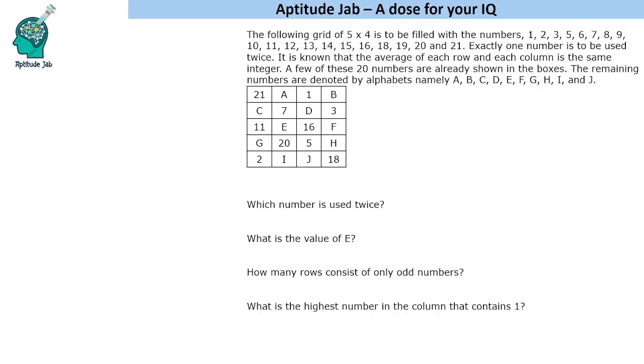Hello everyone, welcome to Aptitude Jab. This is a number puzzle wherein 20 numbers are to be filled in a grid which has 5 rows and 4 columns, and it has to be filled with numbers 1, 2, 3...